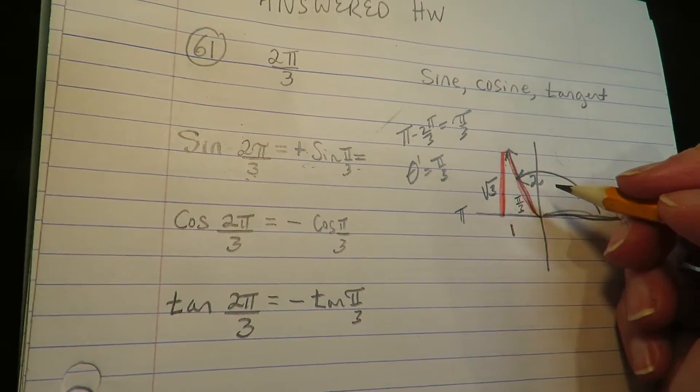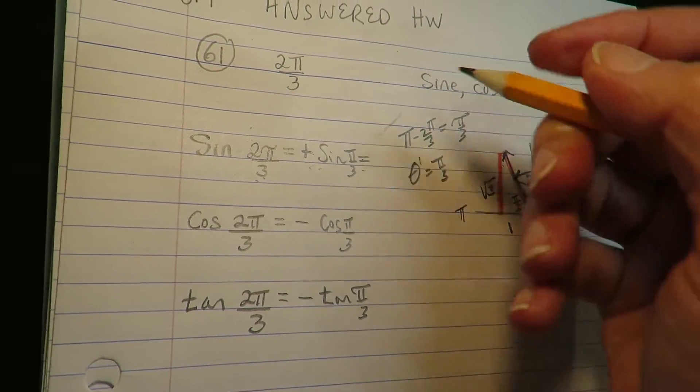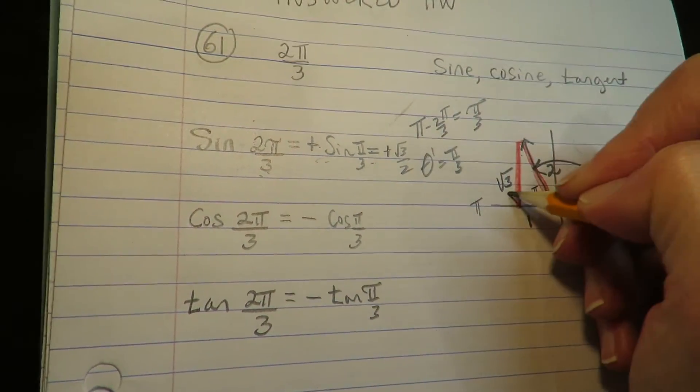Alright, so sine of π/3 is opposite over hypotenuse. So that's positive √3/2.